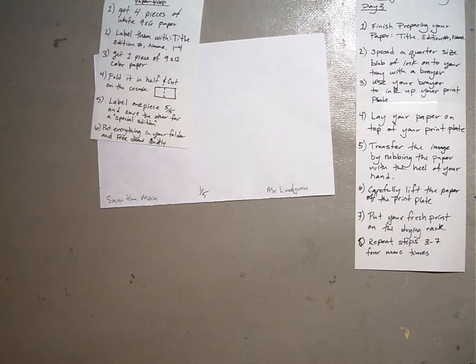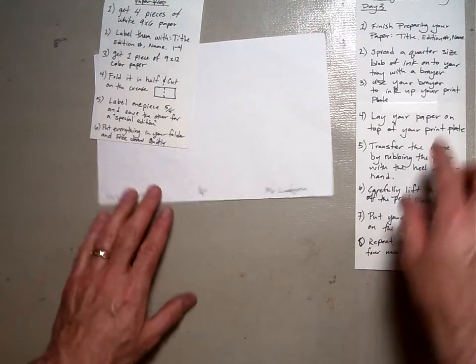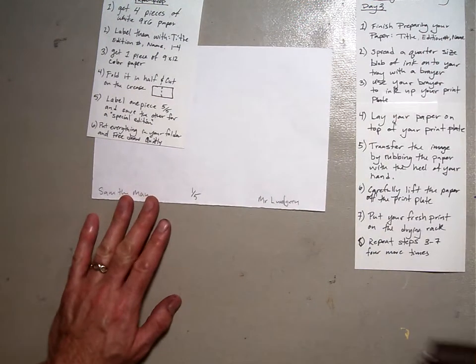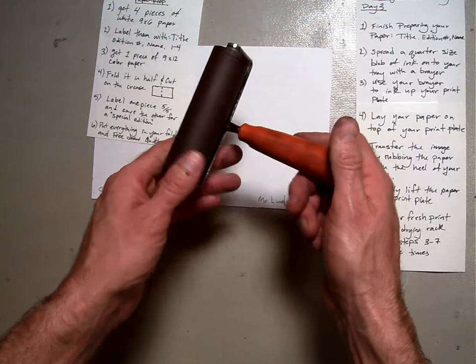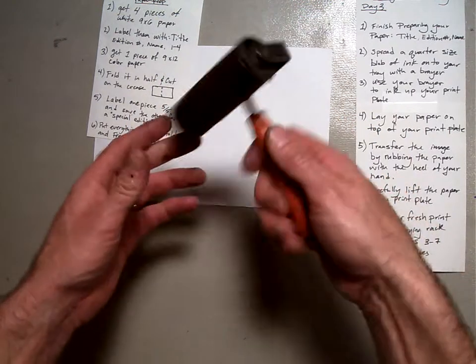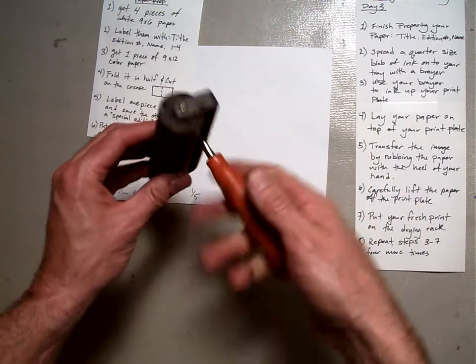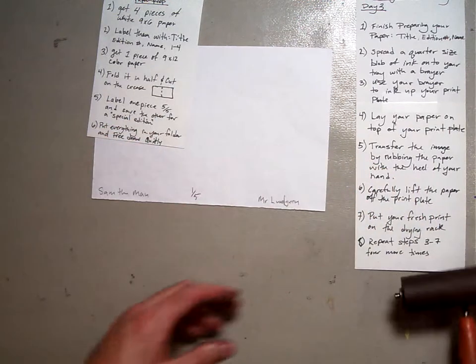In order to get started on our printing, what you're going to need to do is get these supplies. A brayer. The brayer is a rubber roller here and a nice handle that you can hold onto. Make sure to keep that handle clean so you don't get your hands dirty.